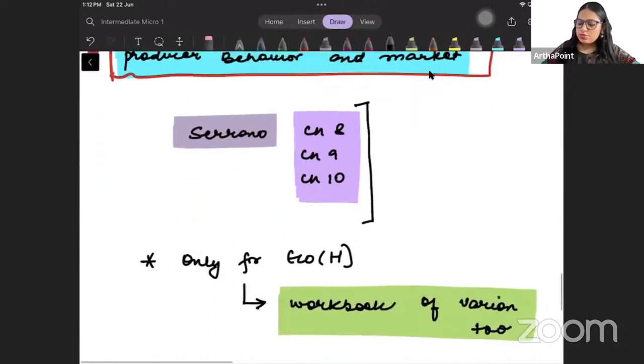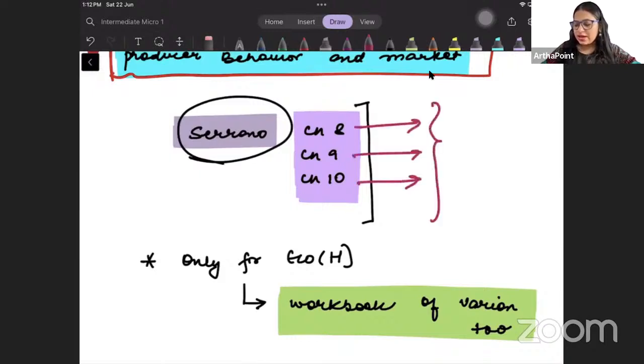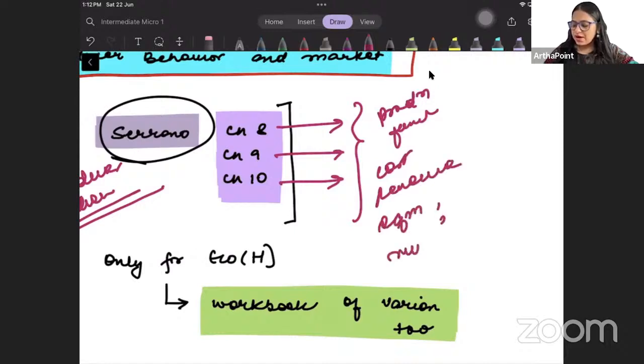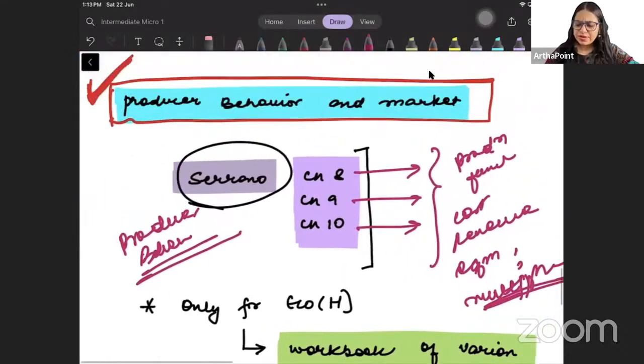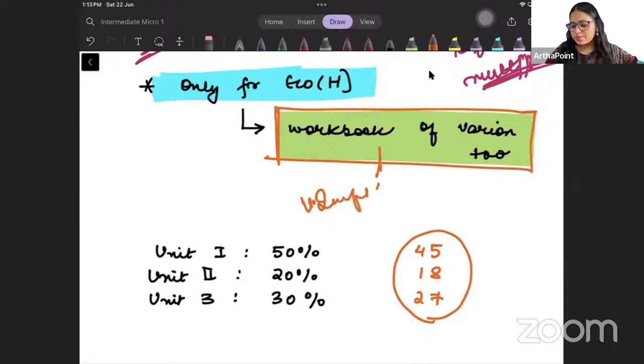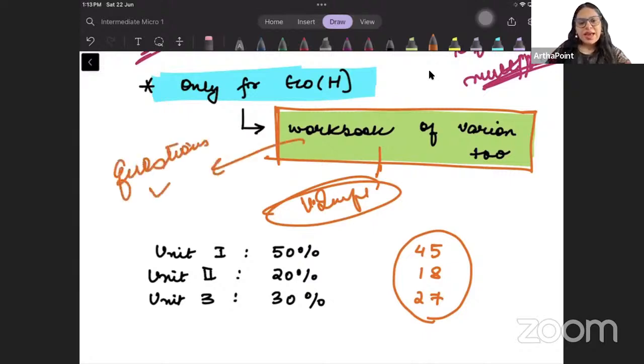And ultimately we will be doing producer behavior. That I will be doing from Serrano chapters 8, 9 and 10. Here we will study what is production function, cost, revenue function, and how to find equilibrium like multi-plant equilibrium. Only for economic honour students you need to also do the workbook of Varian, very important. It is always suggested that you do the workbook of Varian - most of the questions that you will be seeing in exam can be solved well if you do this workbook.